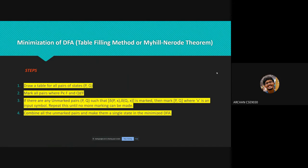The other process of minimization of DFA is the Myhill-Nerode theorem, also called the table filling method. Let's look into the procedure: how to continue this theorem, how to make out this theorem.